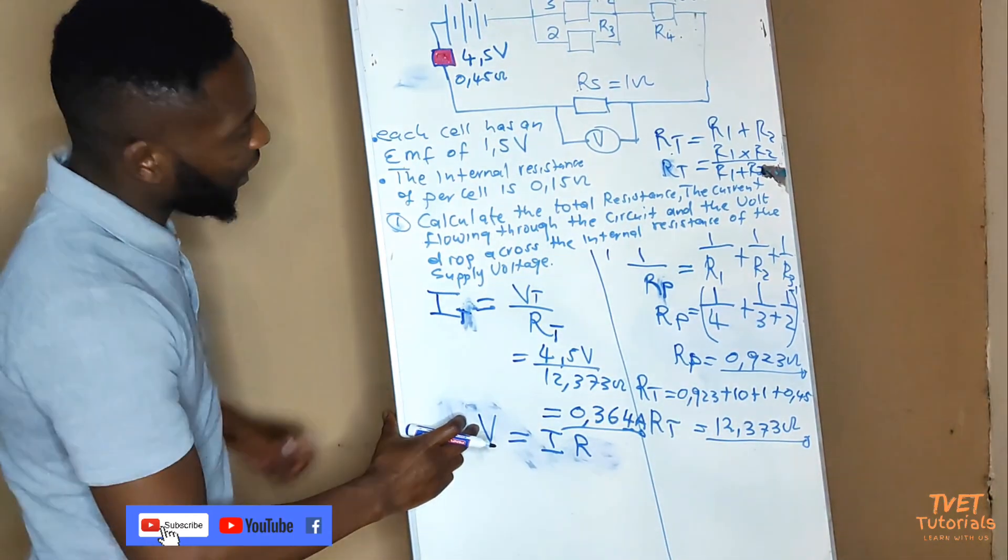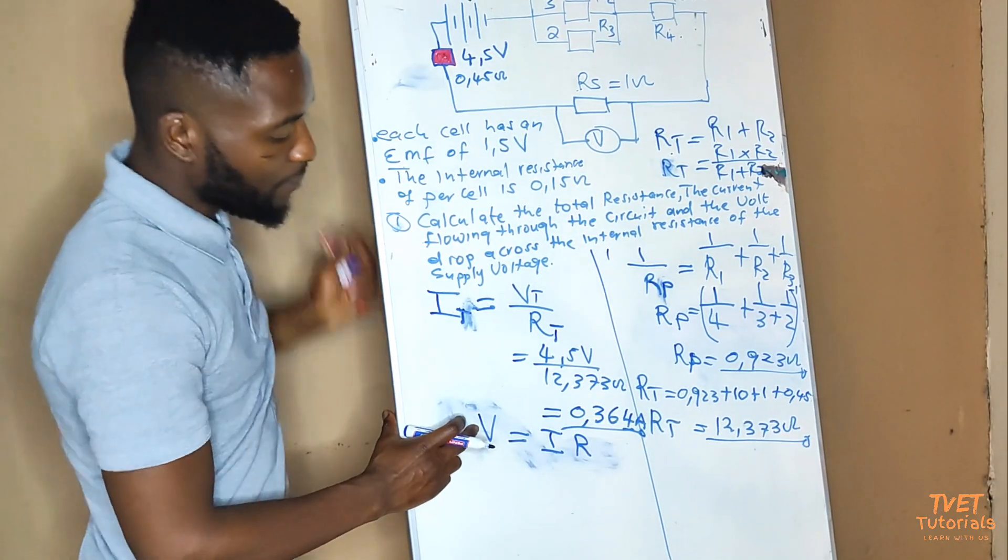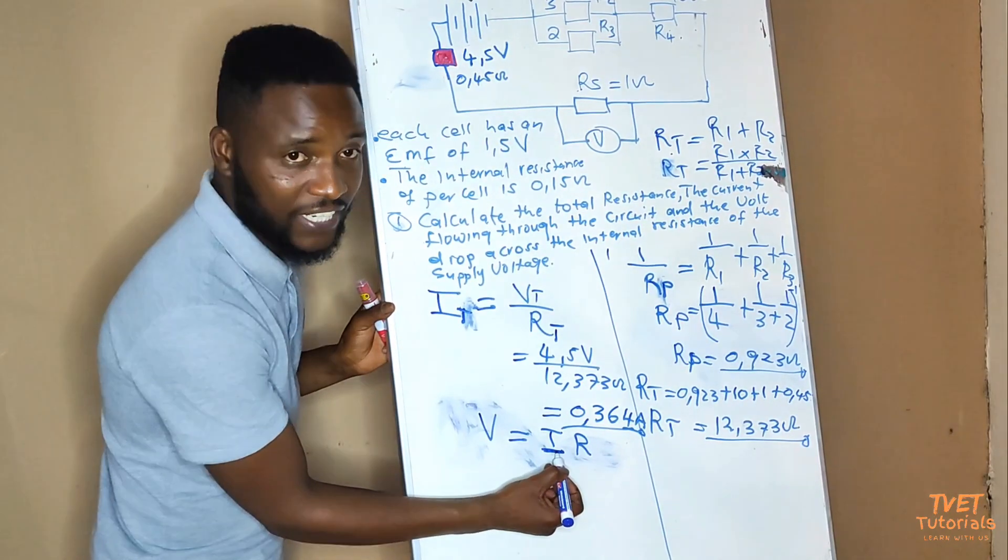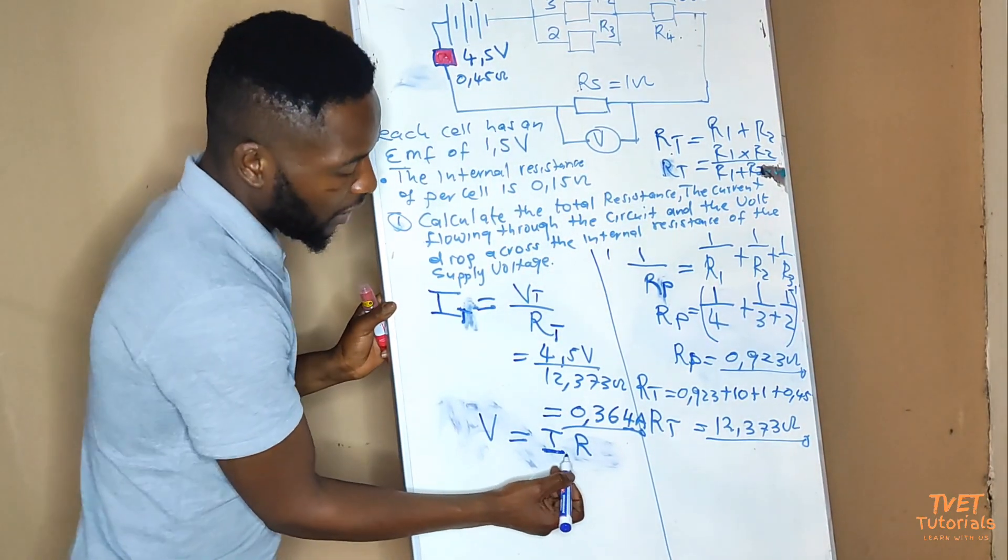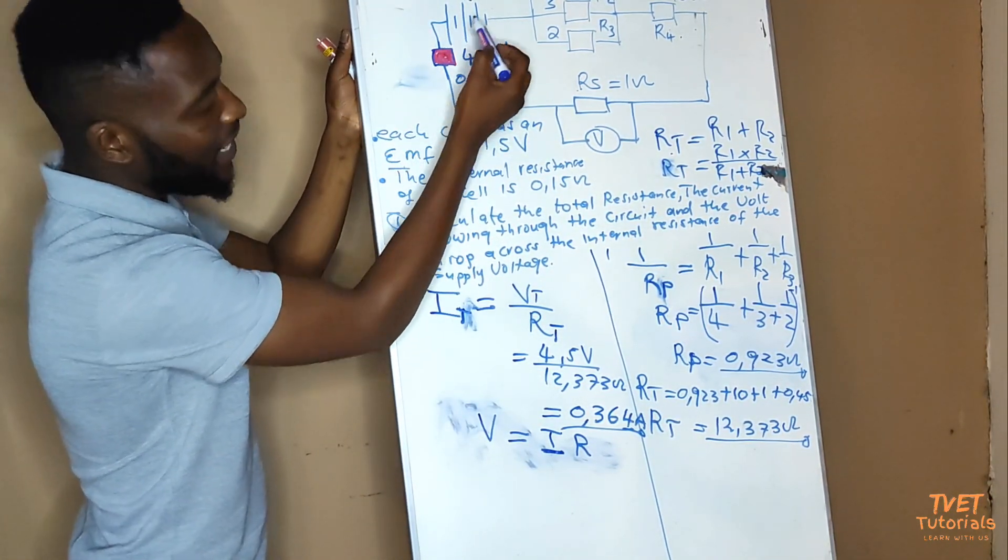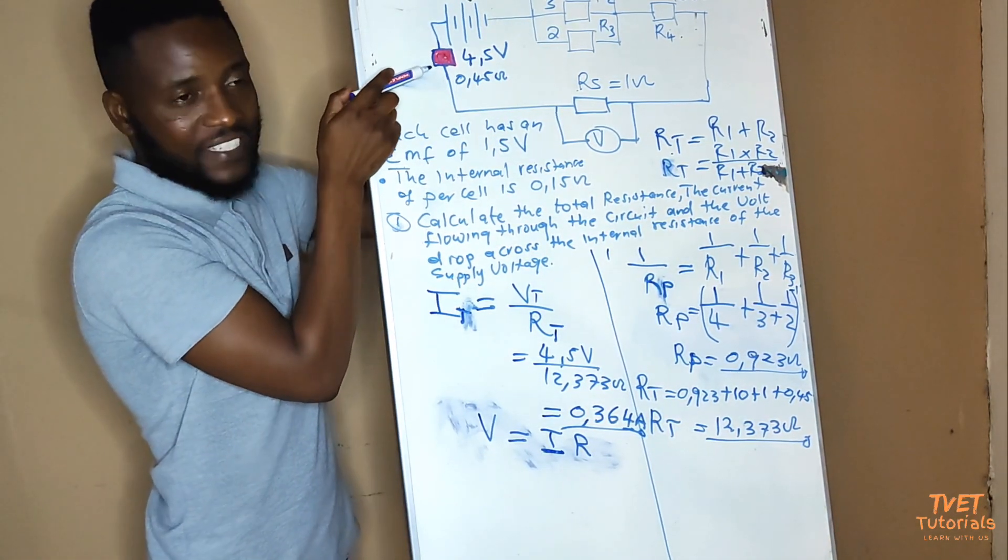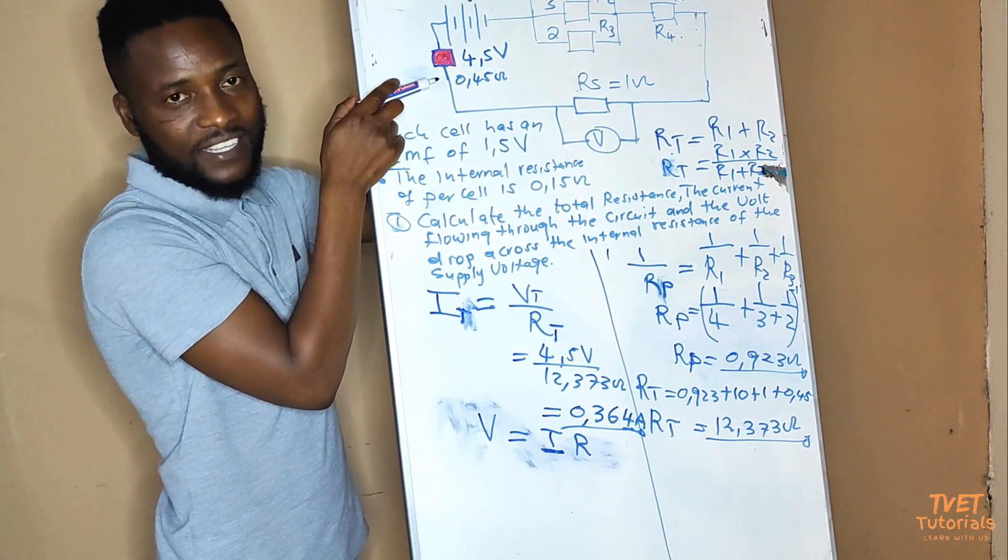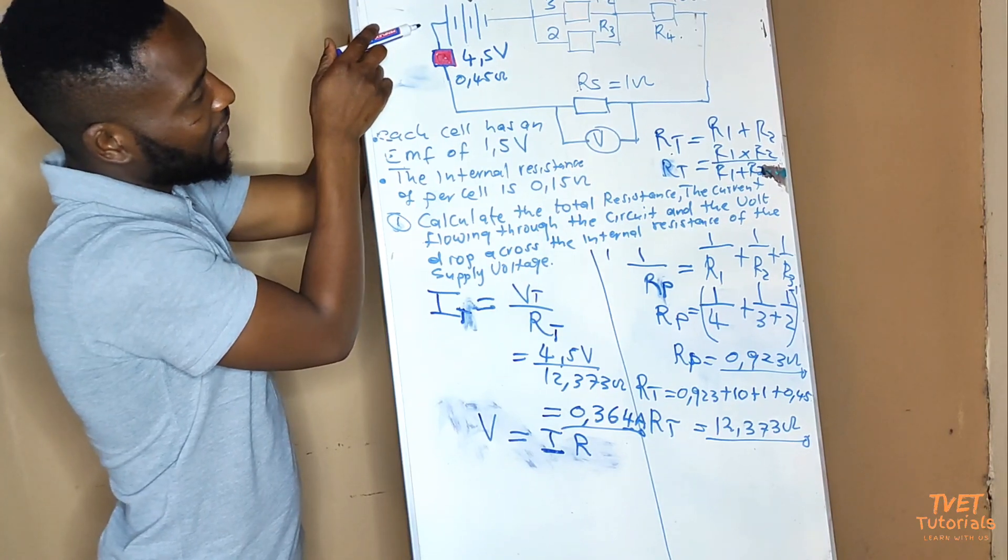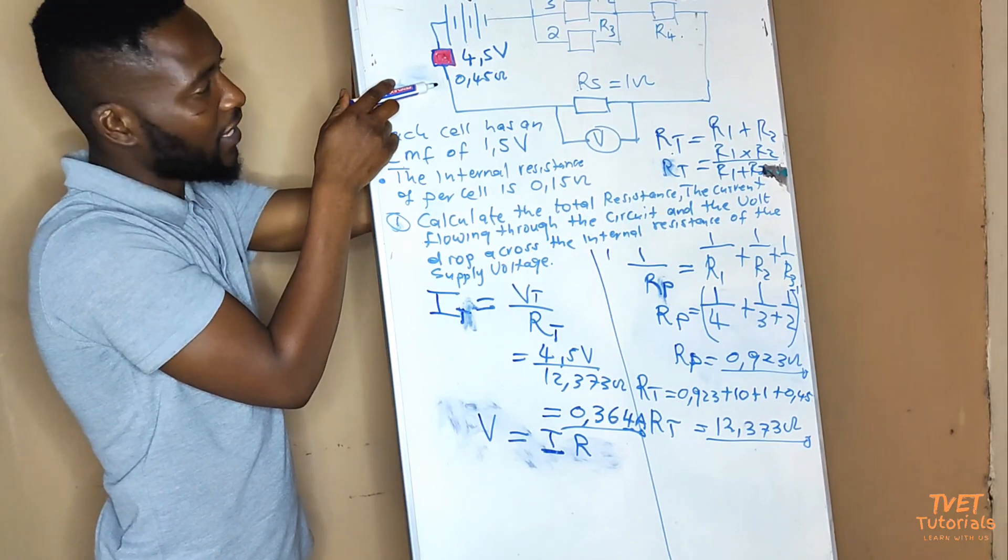We are calculating the voltage drop across the internal resistance, so we must know the current that is flowing through the internal resistance. What we have to remember is that the supply that produces the current is connected in series with the internal resistance. So the current that is produced by the supply will flow through the internal resistance.